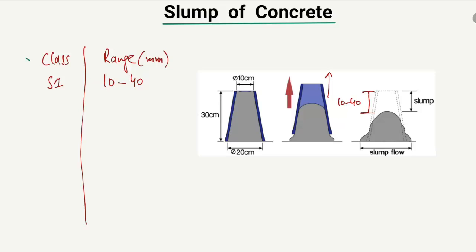S2 class is where the slump ranges from 50 to 90 millimeters. For example, if the slump height is 70 millimeters, we call it S2 class because 70 millimeters is in the range of 50 to 90 millimeters. S3 class has a range of 100 to 150 millimeters and represents more fluid concrete.